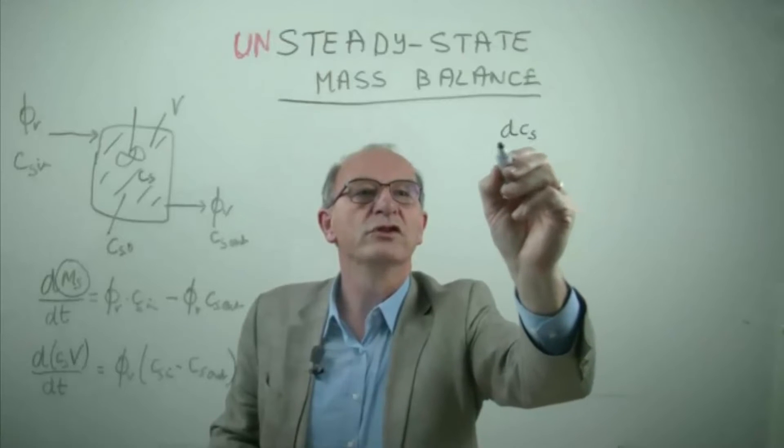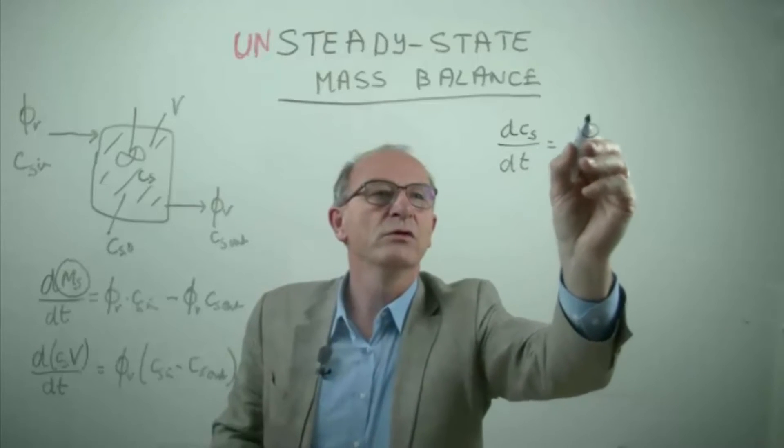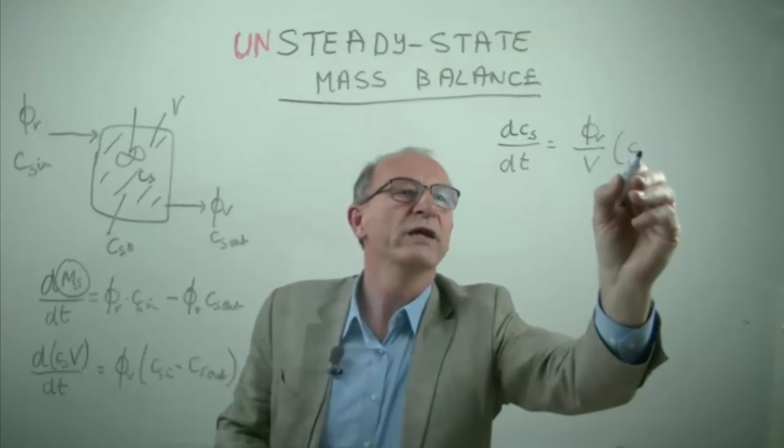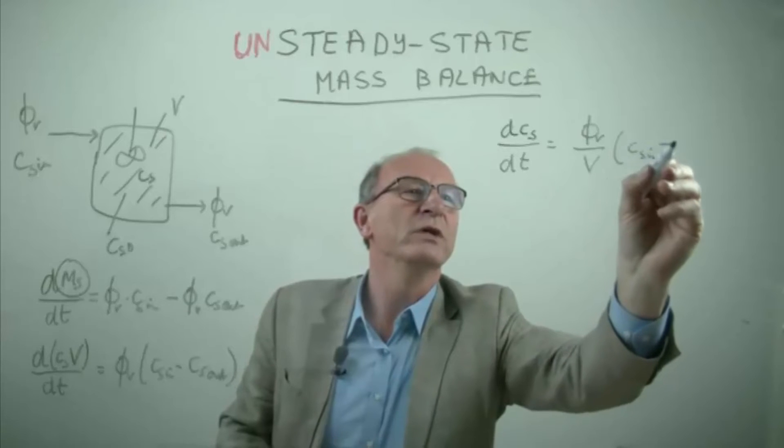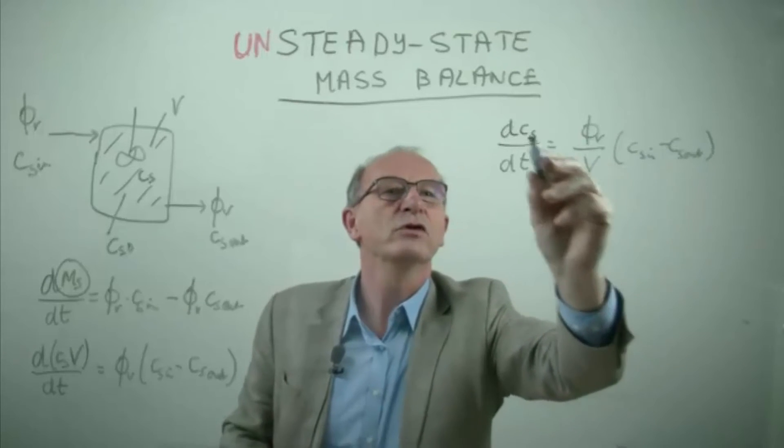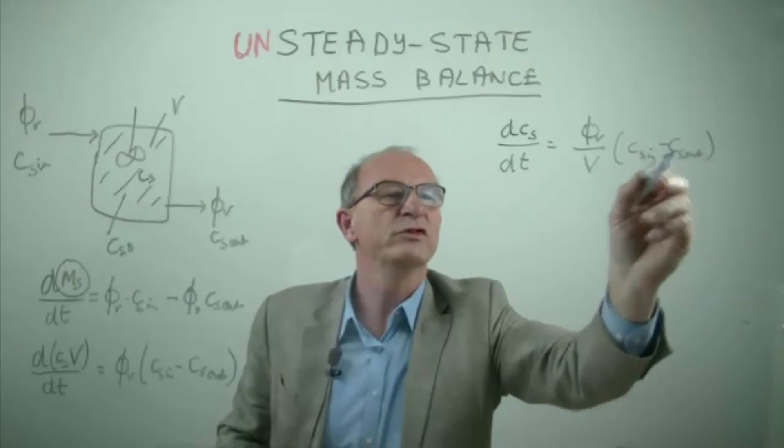First of all, the change of concentration as a function of time is equal to the volume flow rate divided by the volume times the concentration in the inlet minus the concentration in the outlet, which is similar to the concentration in the vessel. So in the rest of this equation we will put C_s.